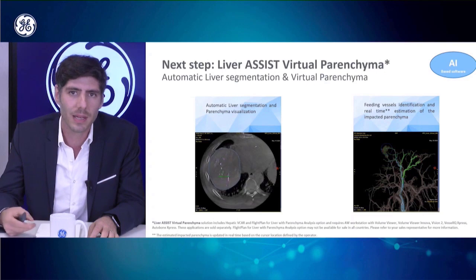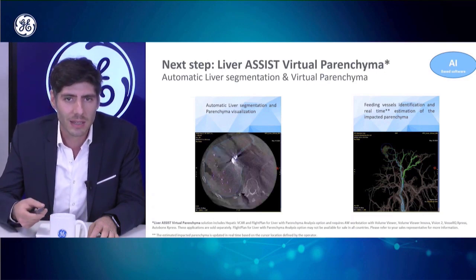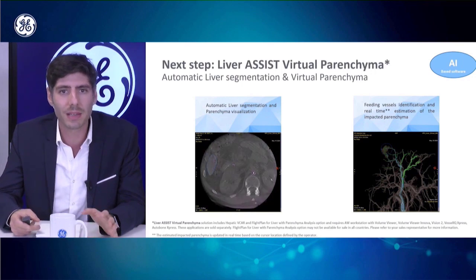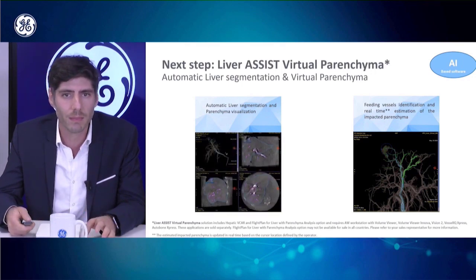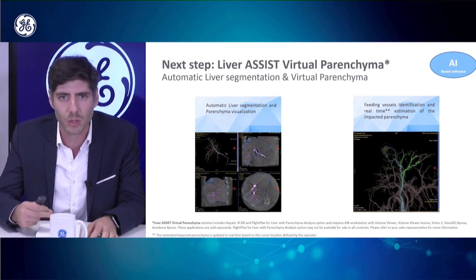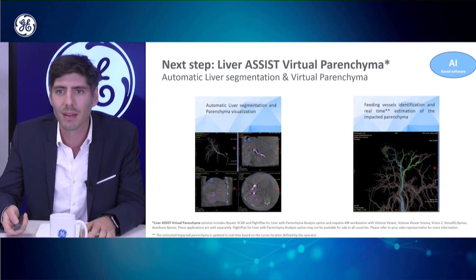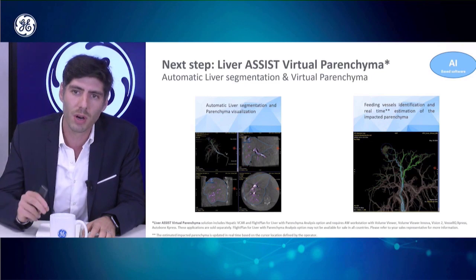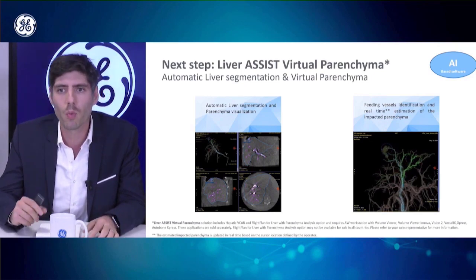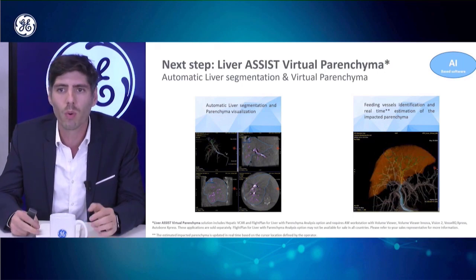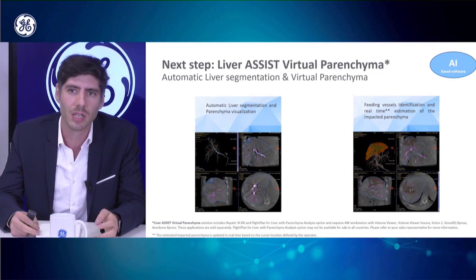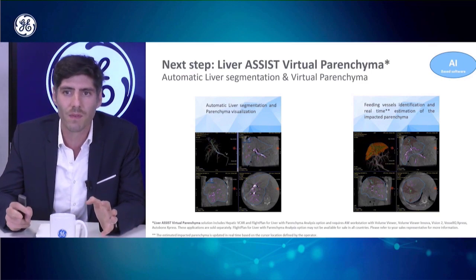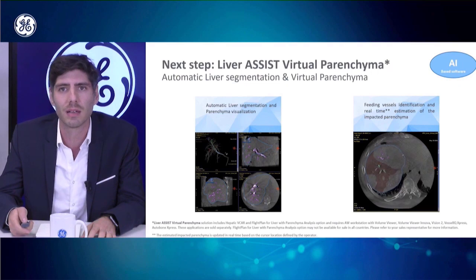The next step is how to use Liver Assist Virtual Parenchyma. In a CBCT acquisition you can see the segmentation of the liver volume in blue, which is an AI-based algorithm that very rapidly provides the liver volume with good confidence. You can then navigate on all extracted branches to see which branch feeds the tumor, and depending on where you select your injection point, you can identify what parenchyma will be impacted — giving you a virtual estimation of the treated liver parenchyma.